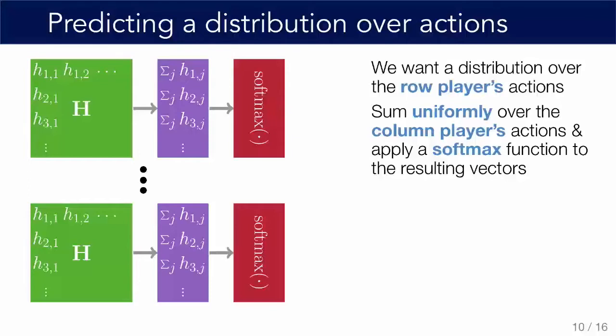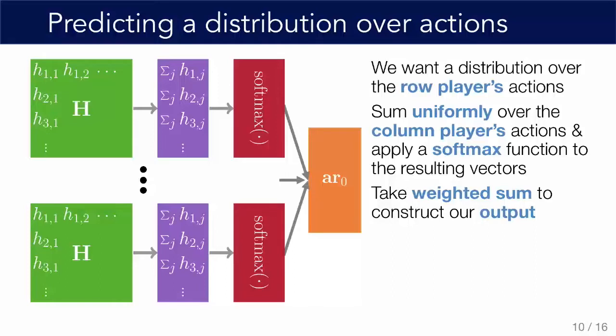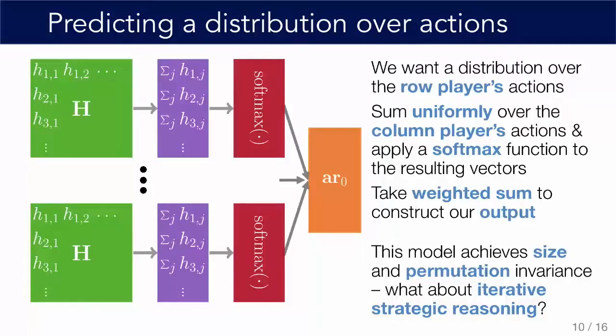At this point, we have a model that can learn an interesting representation of our input matrix, but what we really want is to make a prediction about the row player's actions. We take the final hidden units in the final layer, sum uniformly over the column player's action to get a number of vectors, apply softmaxes to those resulting vectors to get a number of distributions, and then take their weighted sum — where the weights are learned — to produce our final output. This gives us a model mapping from an arbitrary input payoff to a distribution over the row player's actions, with flexible comparisons between outcomes through the action pooling units.